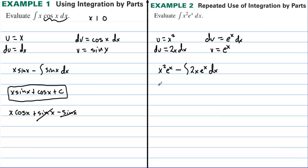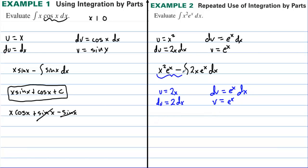We still don't know how to take the antiderivative of 2x·eˣ, so we do integration by parts again. We let u equal 2x and dv equal eˣ dx, giving v equals eˣ. Bringing down the previous result: x²eˣ minus, and now applying integration by parts to this part: minus u times v, which is 2x·eˣ, minus the integral of v du.